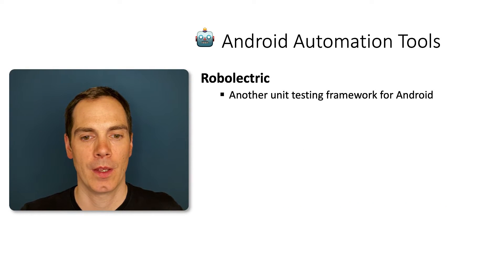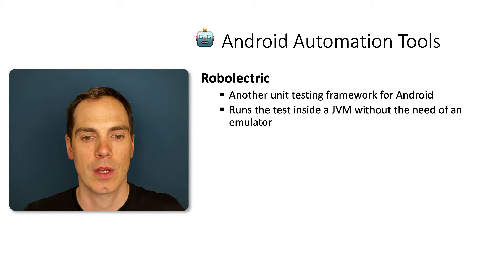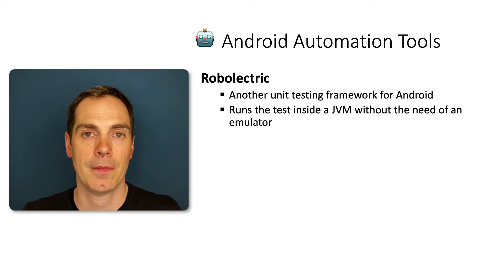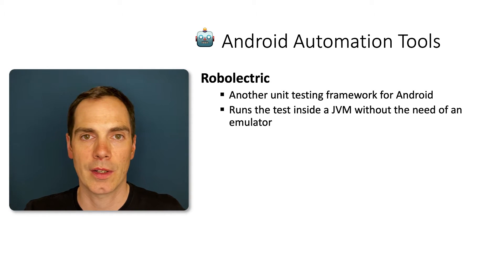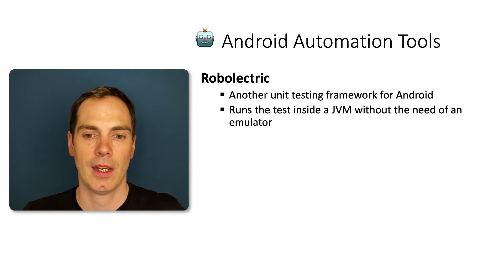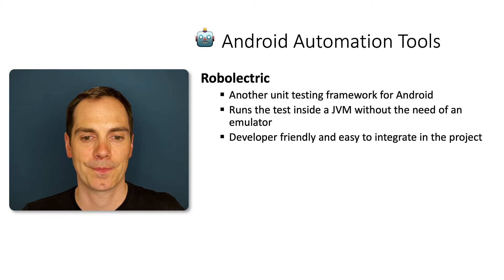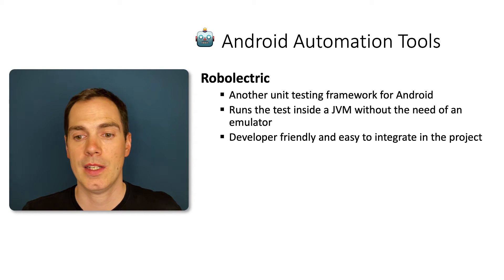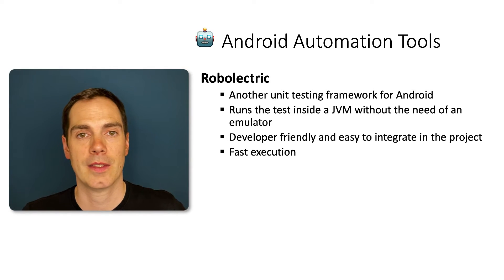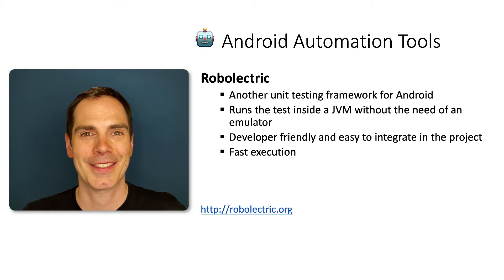Robolectric is another unit testing framework for Android. It runs tests inside a JVM without needing an emulator — so instead of starting an emulator and waiting for it to boot, everything runs in the JVM, making it much faster. It's developer-friendly, easy to integrate into a project and into Android Studio, and fast in execution.